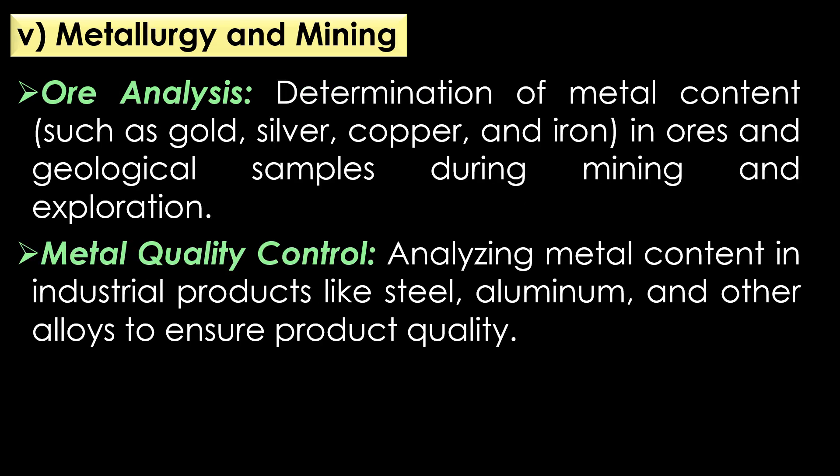Application of atomic absorption spectroscopy in metallurgy and mining: AAS is very useful for ore analysis and metal quality control. In ore analysis, atomic absorption spectroscopy is useful for the determination of metal contents such as gold, silver, copper, and iron in ores and geological samples during mining and exploration. In metal quality control, AAS helps in analyzing metal content in industrial products like steel, aluminium, and other alloys to ensure product quality.